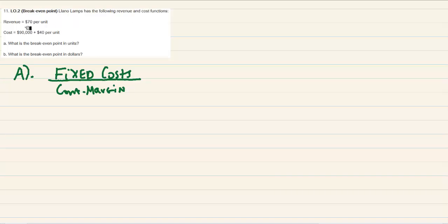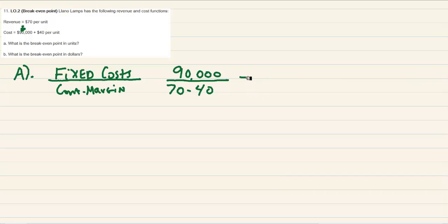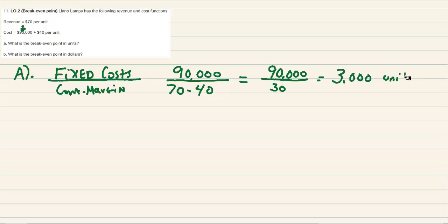We're given fixed cost of $90,000, so let's plug that in at the top. We're given $70 for revenue and $40 cost. Remember, contribution margin is your revenue per unit minus your variable cost per unit. So our formula would end up being $90,000 over $30. If we do the math on that, we get 3,000 units — we have to sell 3,000 units with that cost structure in order to break even. That's part A.